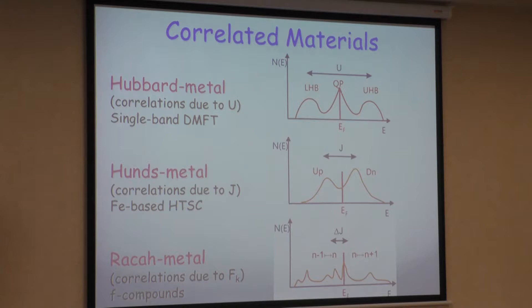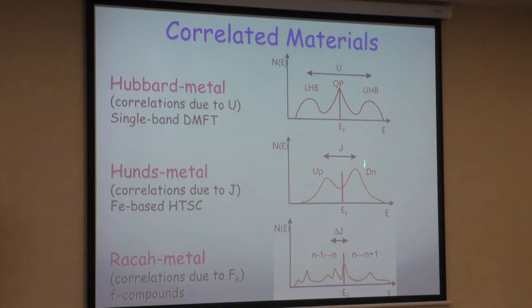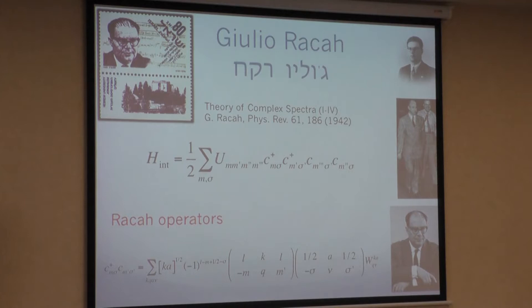This is a pictorial view of different types of correlated materials. If it's single orbital, you have Hubbard physics with a three-peak structure: lower Hubbard, quasi-particle, upper Hubbard. If you have a strong Hund's effect, you have a pseudo-gap from the quasi-particle due to spin splitting. There are elements where all Coulomb parameters are important — we call these Racah metals — where you have both quasi-particle and many multiplets.